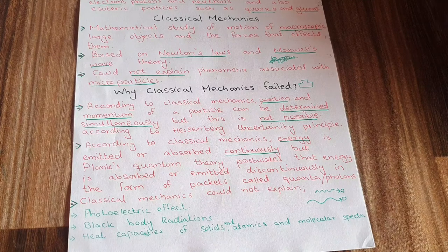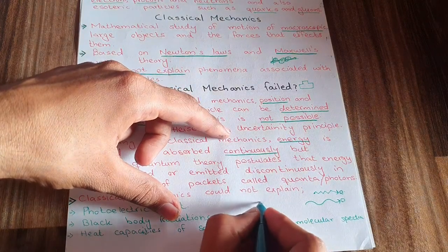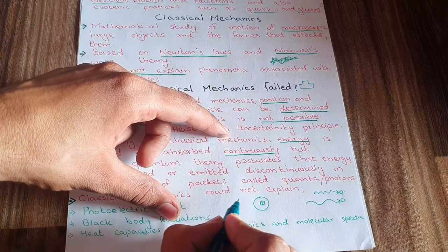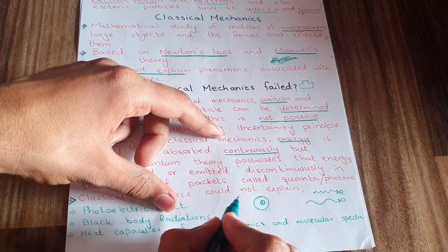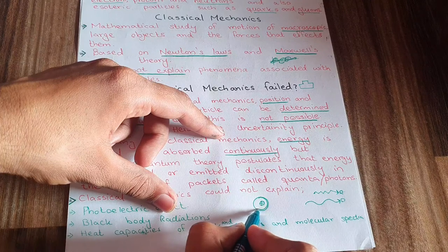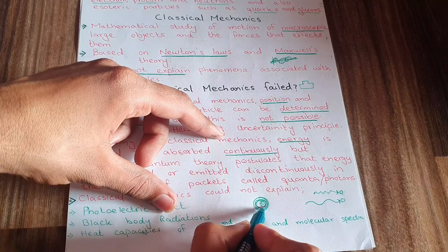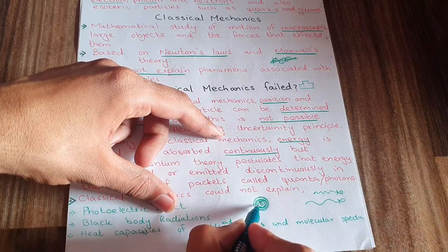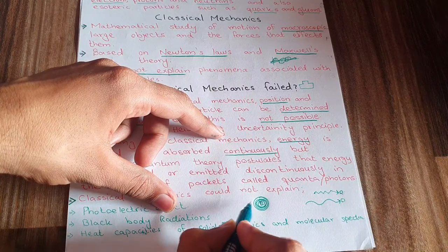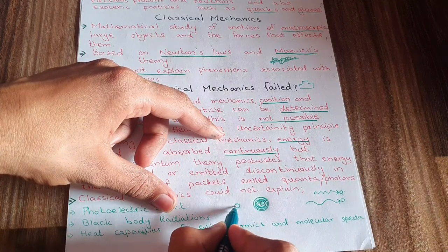Consider an atom with a central positive nucleus and electrons revolving around it. If energy were emitted continuously, the electron's energy would keep decreasing and it would eventually fall into the nucleus, completely destroying the atom. But that does not happen.